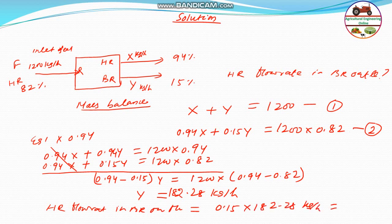That will be equal to 27.34 kg per hour. I think this is the answer that is B that is given in the official key of the GATE 2019. Hope you understand this is the answer for this question. This is 27.34 kg per hour is the head rice flow rate in the broken rice outlet.